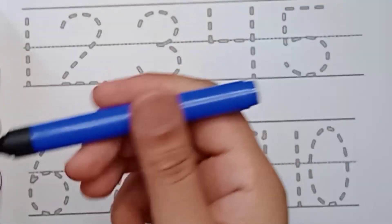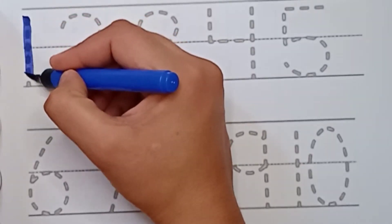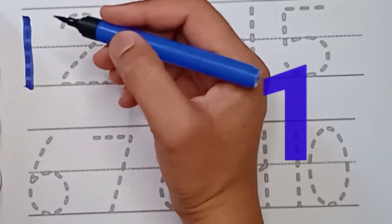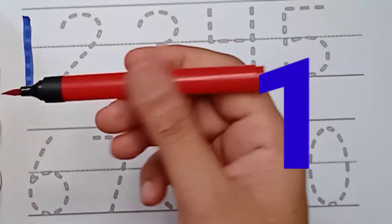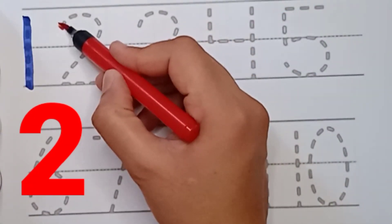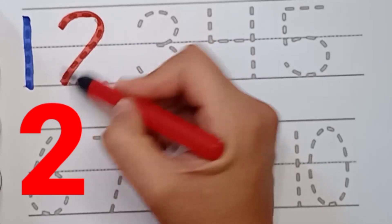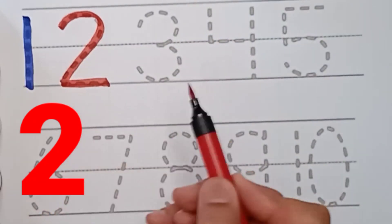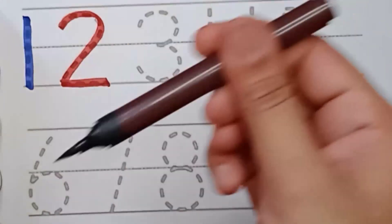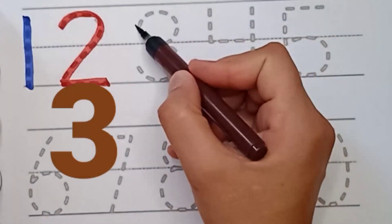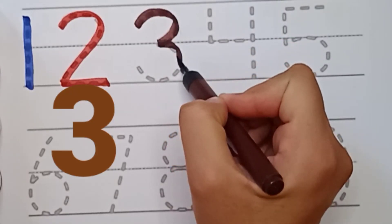Let's start writing. One: the blue color, one. Red color, two. Brown color, three.